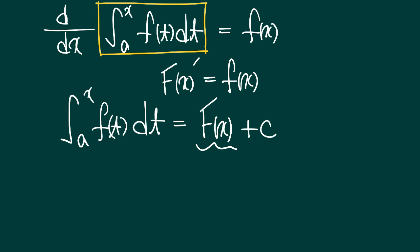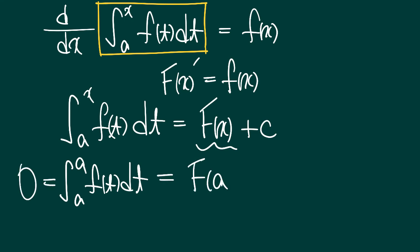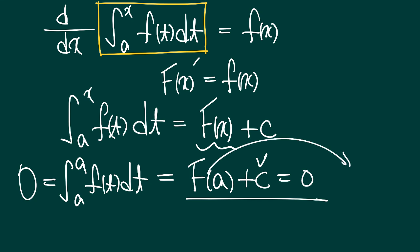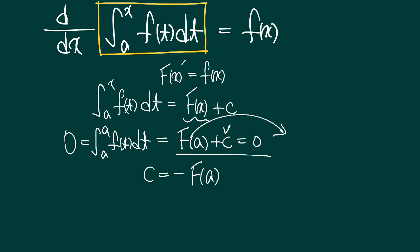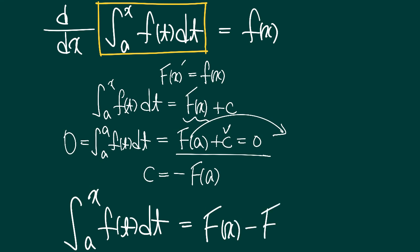If we put a into x in the integral from a to x, the whole part becomes zero. The integral from a to a of f(t)dt is zero, so large F(a) plus C equals zero, meaning C should be negative large F(a). Finally, we can see the last formula for the calculation of the definite integral: the integral from a to x of f(t)dt equals large F(x) minus large F(a).